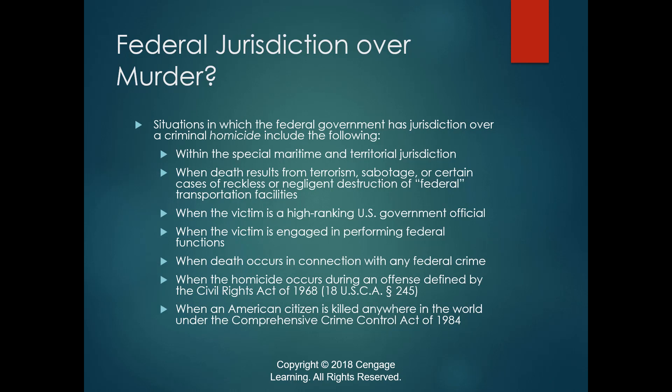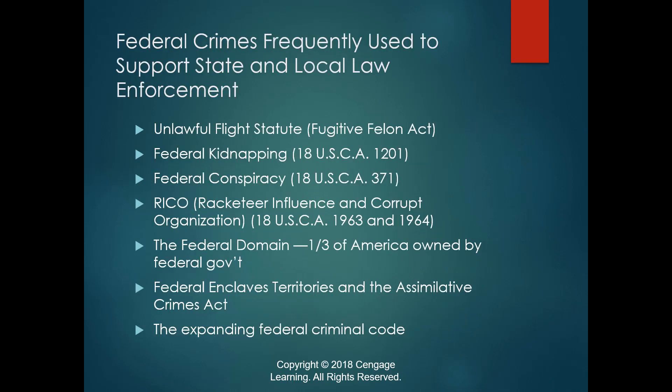When a U.S. citizen is killed anywhere in the world, the federal government — if they can apprehend the perpetrator — can try that individual. This is a broad reach: essentially, if someone is a U.S. citizen and is killed outside the United States, the federal government can try whoever killed them. Additional common federal statutes include unlawful flight statutes and the federal kidnapping law.